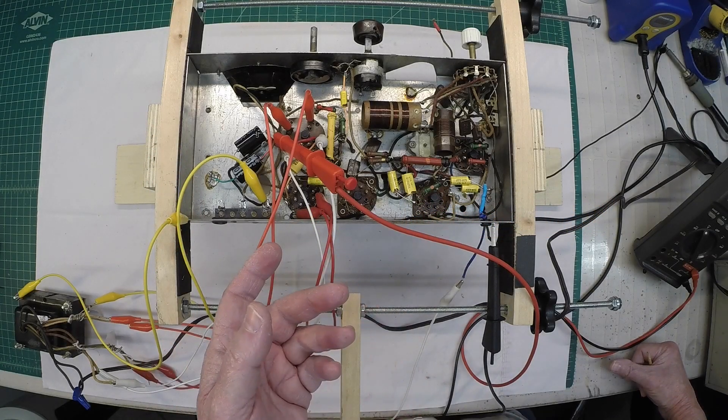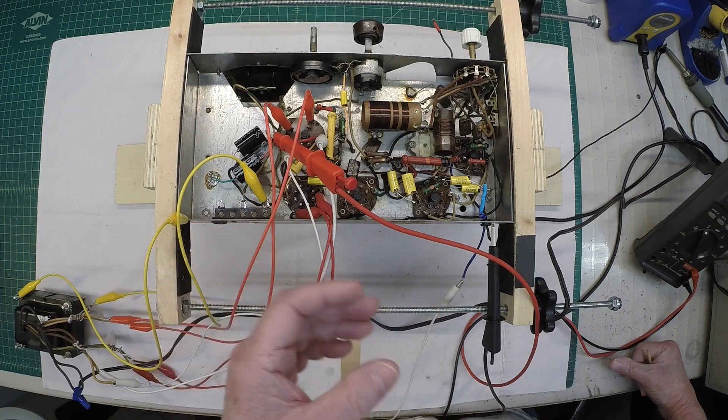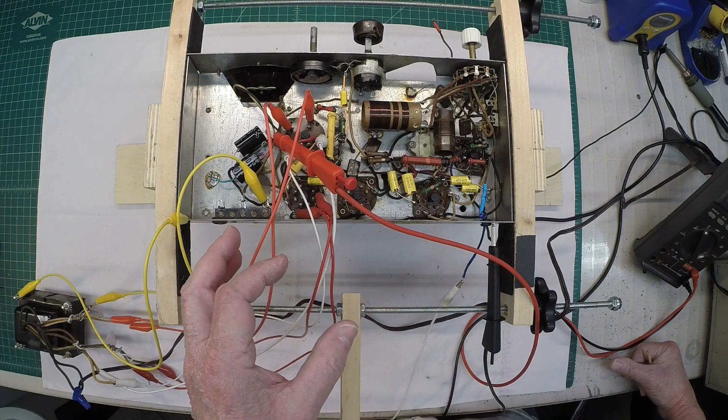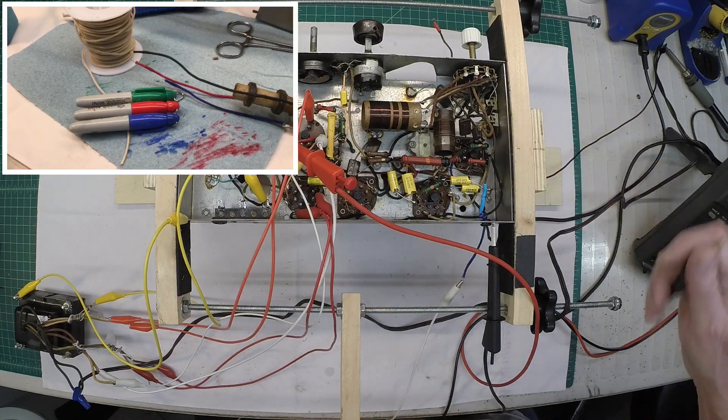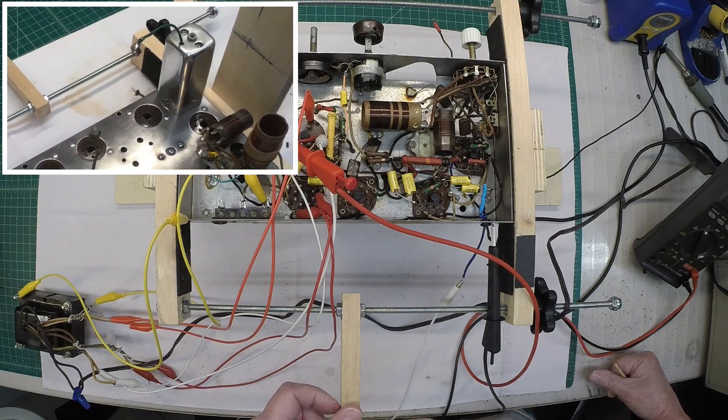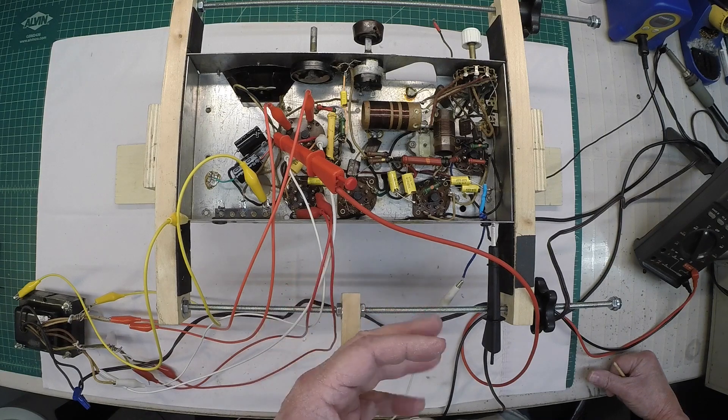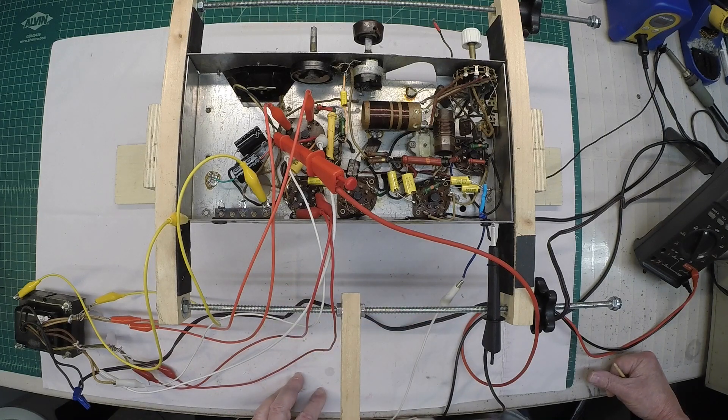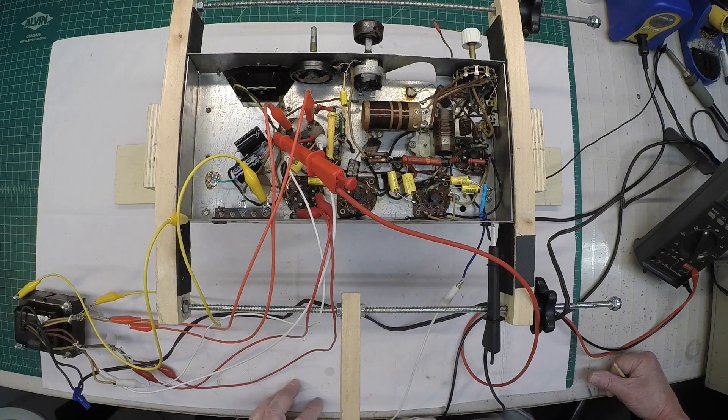As you guys can see, I've got the Jackson Bell 556 recapped. I've also got the IF transformer that I rebuilt back in place, and in addition, I rewired the other IF transformers. Just due to the frayed wires, all the resistors are in tolerance, and all of the paper and wax caps, including the two electrolytics, have been replaced.